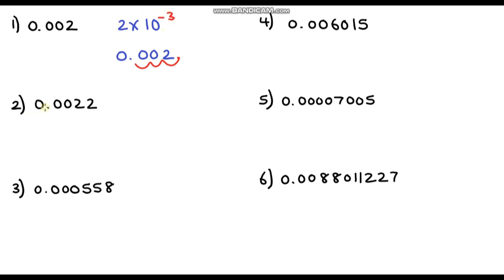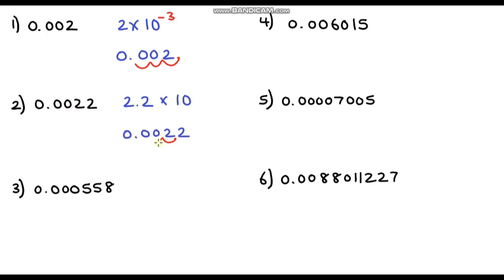Question two: our base number is 2.2, so it's 2.2 multiplied by 10. Copying out the number, the decimal point is between the two 2s. We go back one, two, three places to get to our decimal point, so again the power is negative three.